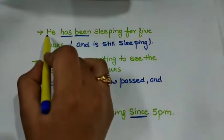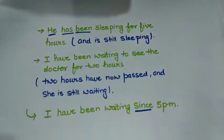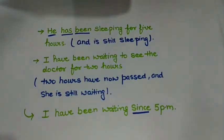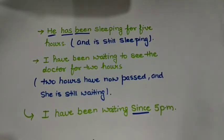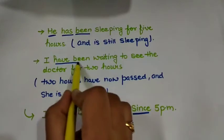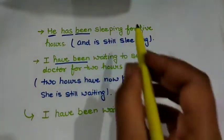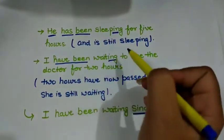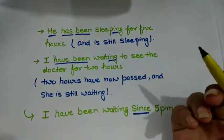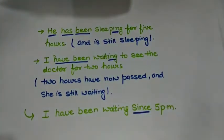Another example: 'I have been waiting to see the doctor for two hours.' Two hours have now passed and she is still waiting, meaning the action is still continuing. So we use 'have been' here. You can also see the -ing form of the verb, which represents the continuity of the action.